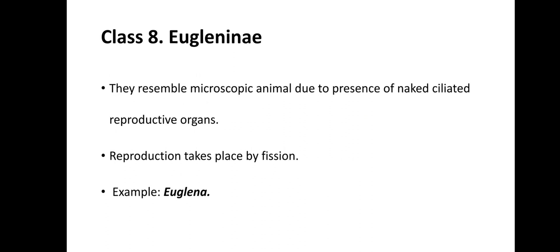Class 8 is Euglenini. They resemble microscopic animals, meaning they look like a microscopic animal due to the presence of naked ciliated reproductive organs. Reproduction takes place by fission. For example, Euglena.